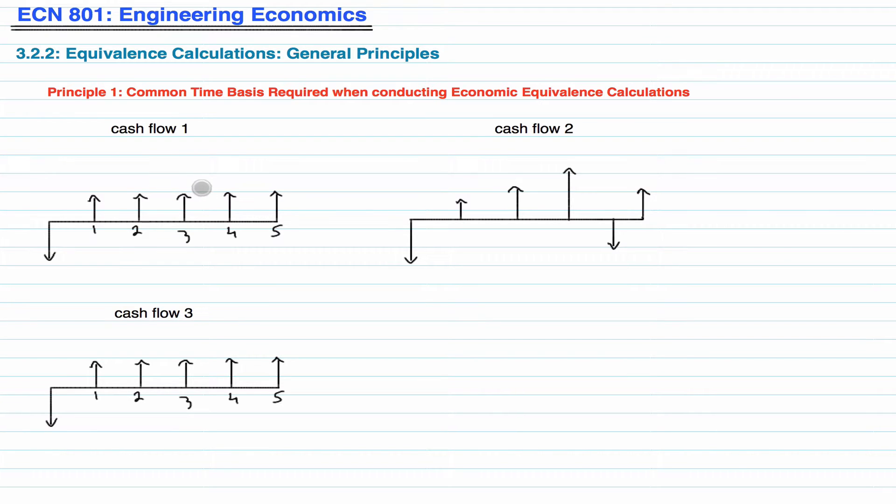When you do any economic equivalence calculation, when you're trying to compare cash flows, you need a common time basis. You can't really compare period 2 with period 3. You can't compare because that's not fair.